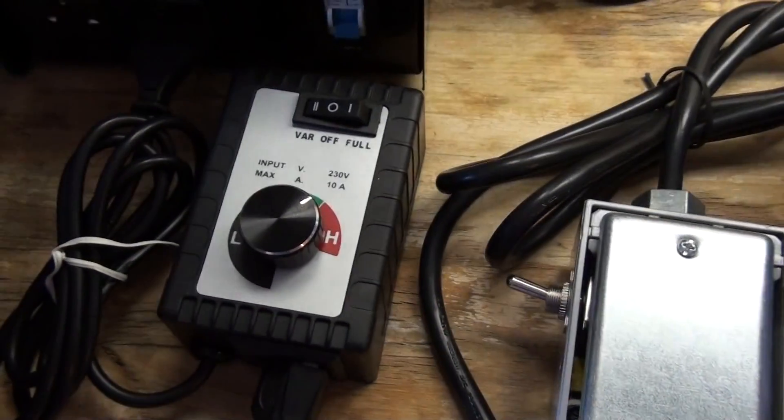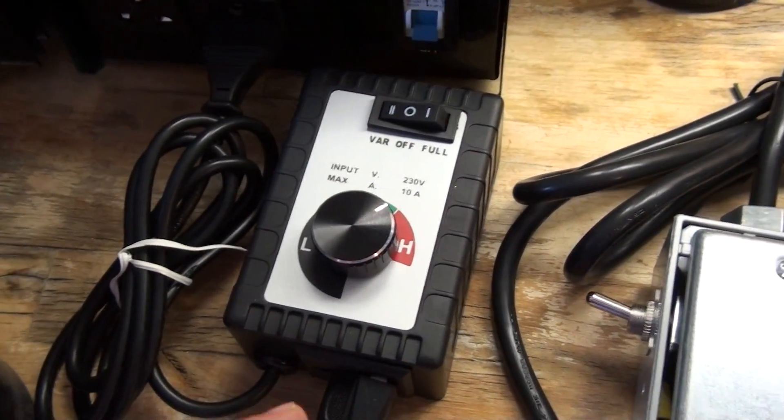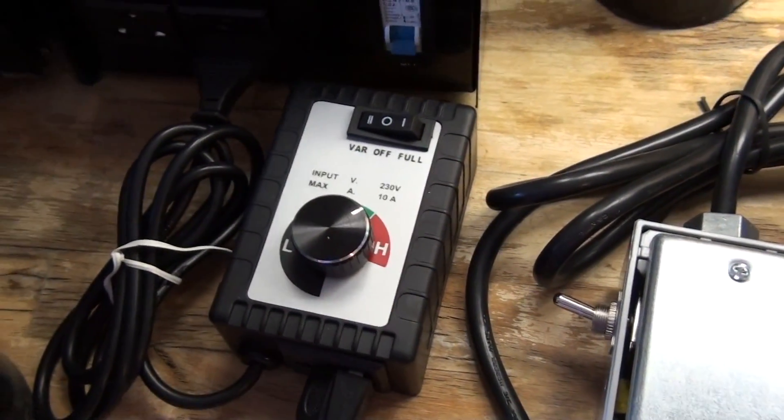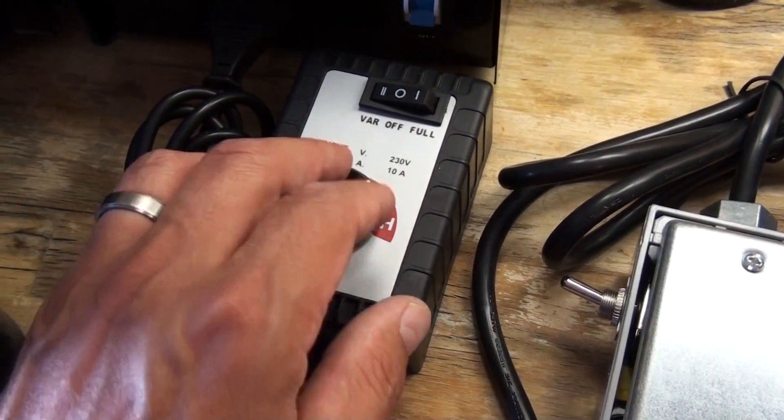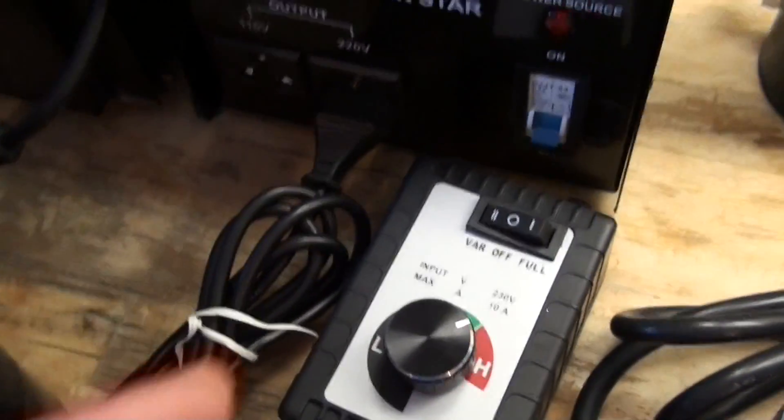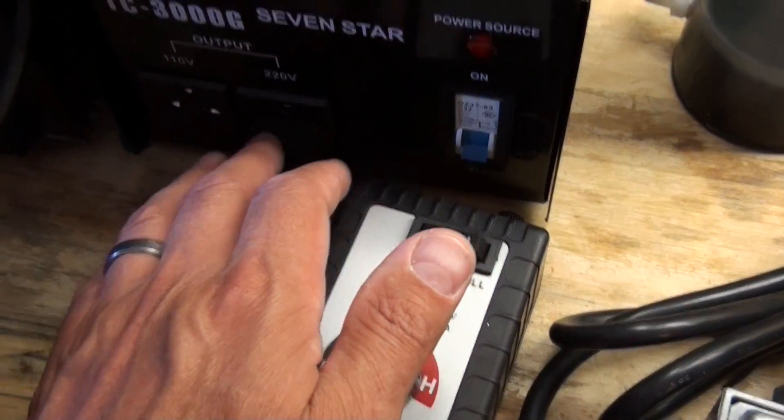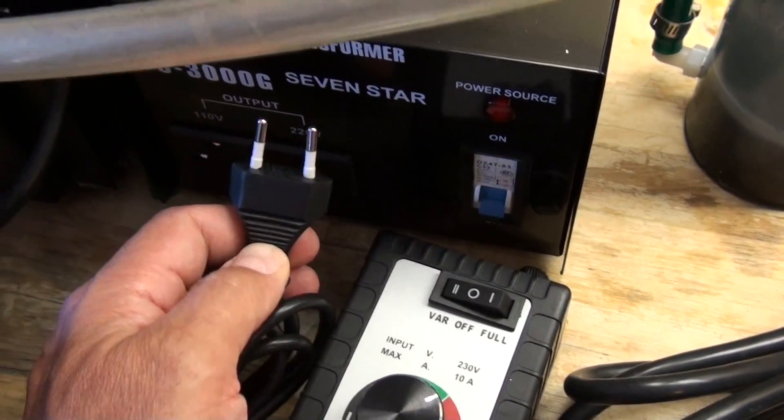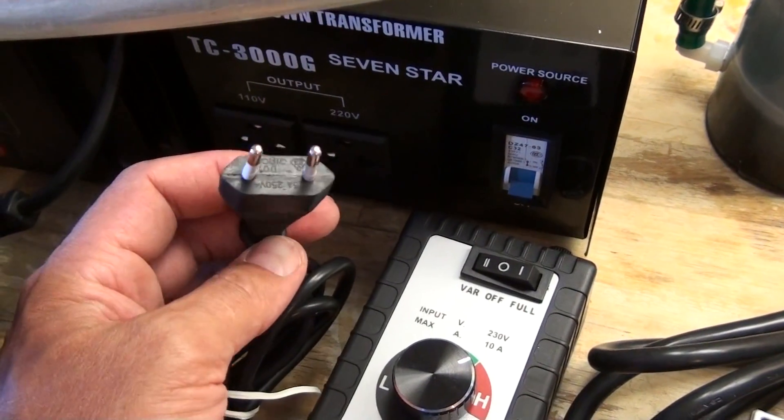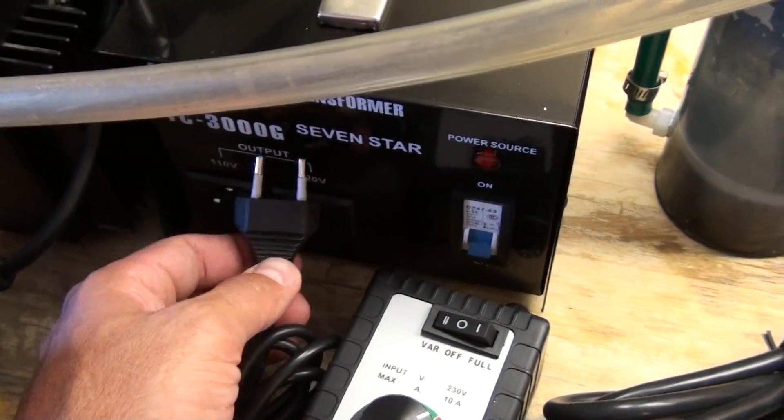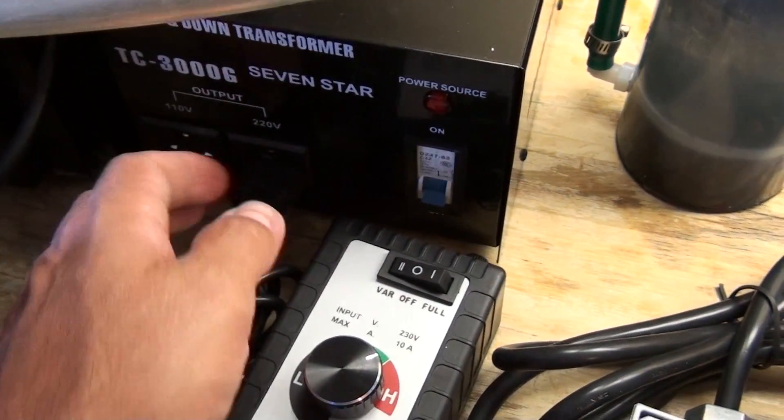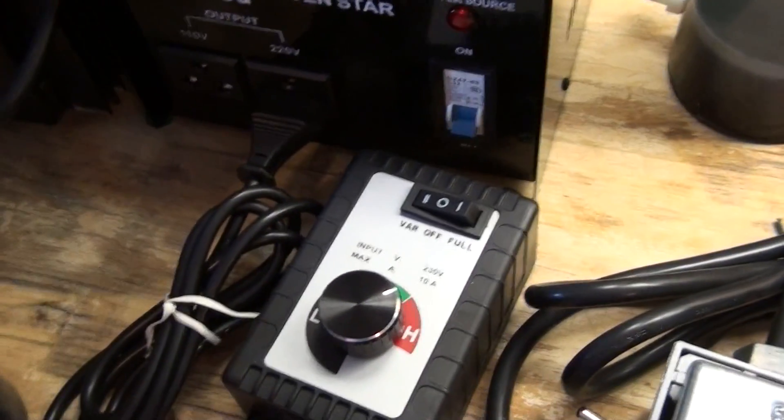And now over here this is a new product also for us. This is a variable controller, the 220 volt model. So for most of the world it's going to be using this controller. On the end here it's got a European style plug. That can be changed out. You will just cut this and put your own plug on it. If you live in Great Britain you've got a different plug. Some places in Africa have got a different plug also. The majority of the world is going to use that plug there.